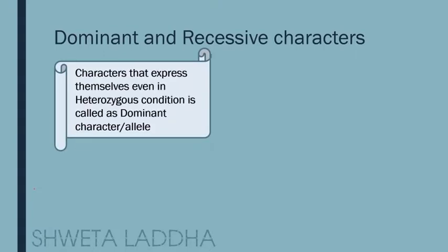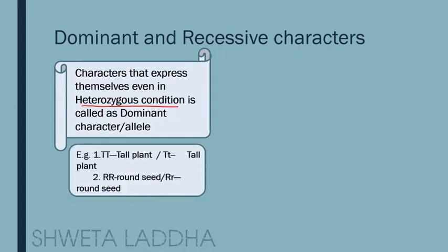Dominant characters are those which can express themselves even in heterozygous condition. For example, capital T capital T is a tall plant, and capital T small t is also a tall plant. The first is homozygous condition, but this tallness can express itself even in heterozygous condition.